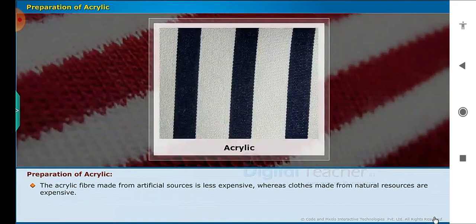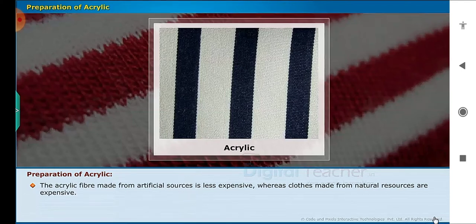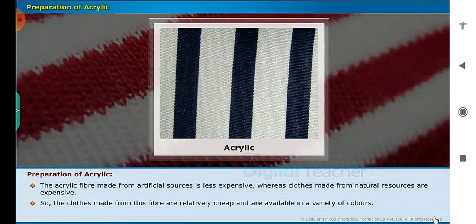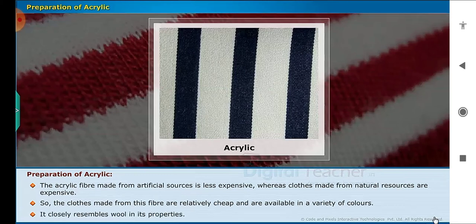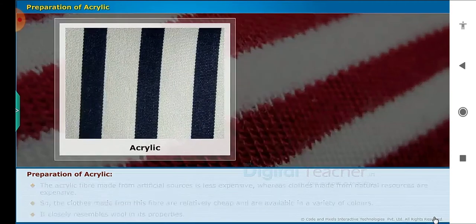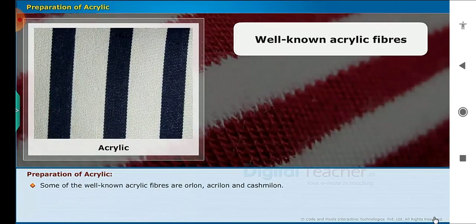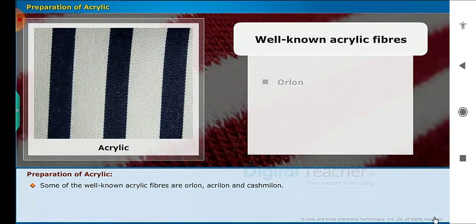The acrylic fiber made from artificial sources is less expensive, whereas clothes made from natural resources are expensive. So the clothes made from this fiber are relatively cheap and are available in a variety of colors. It closely resembles wool in its properties. Some of the well-known acrylic fibers are Orlon, Acrylon and Cashmilon.